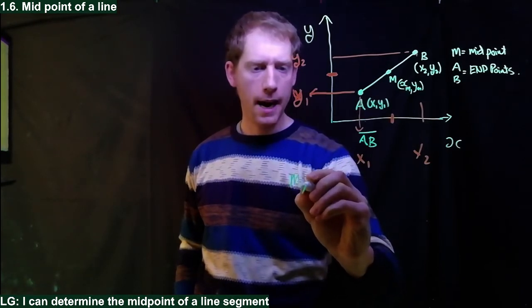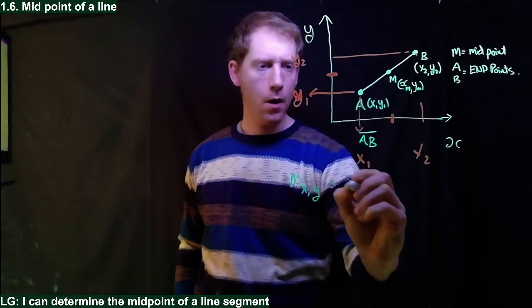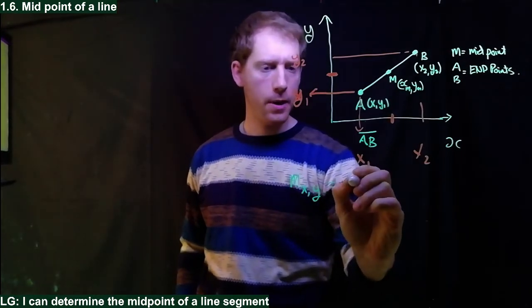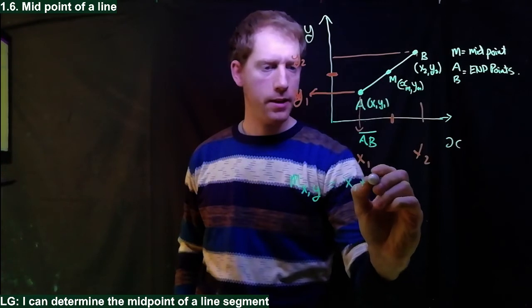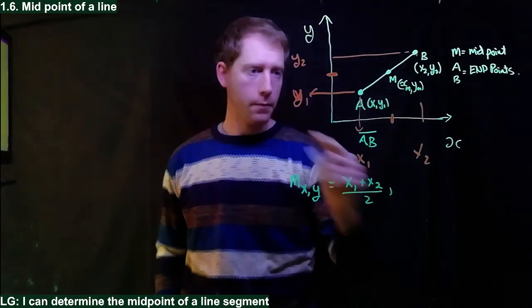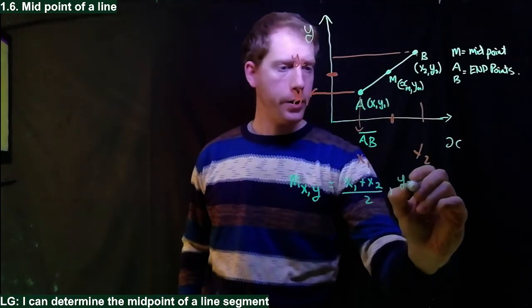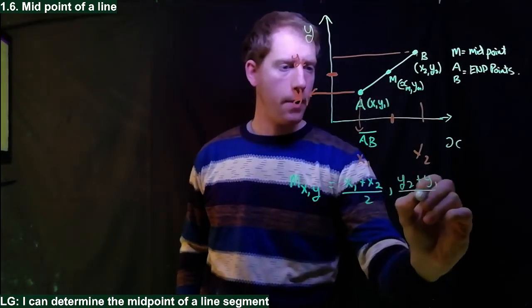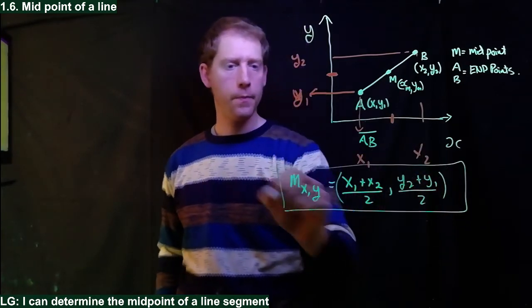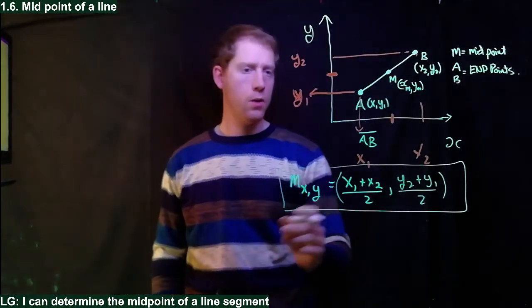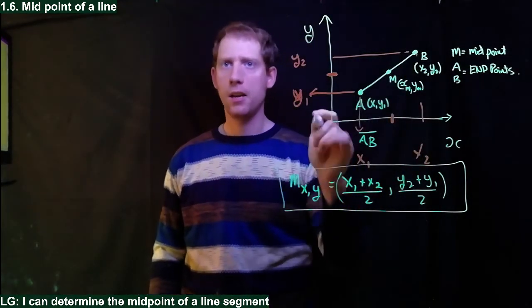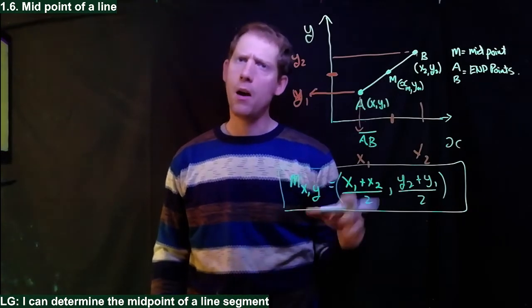The midpoint of your x comma y will be equal to the average x, which is going to be x1 plus x2 divided by 2, comma, y1 plus y2 divided by 2. And that's your equation. You can use these two points and just find an average to determine the midpoint of the line.